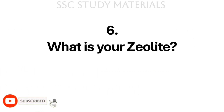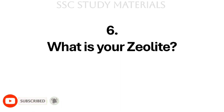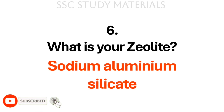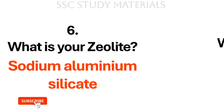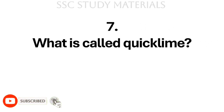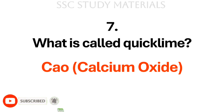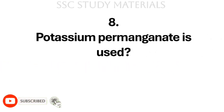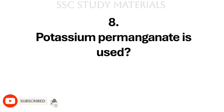Question No. 6: What is zeolite? Answer: It is sodium aluminium silicate. Question No. 7: What is called quick lime? Answer: It is called calcium oxide (CaO). Question No. 8: Potassium permanganate is used as? Answer: Oxidant.